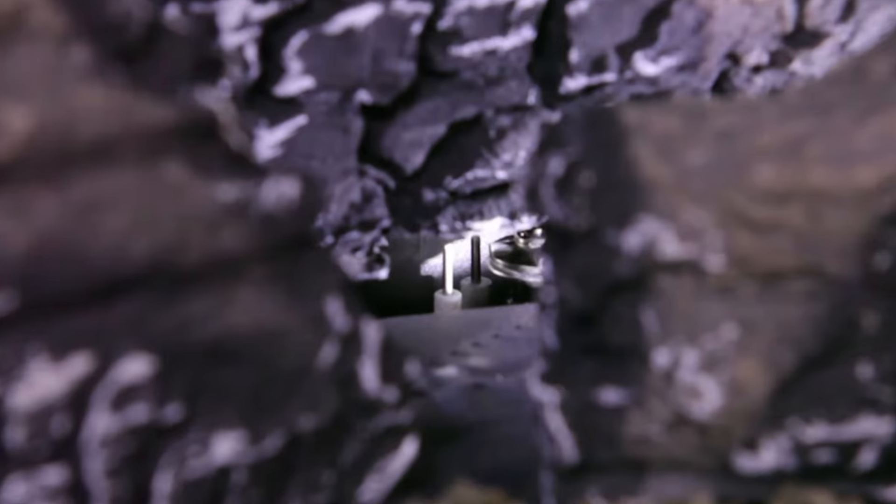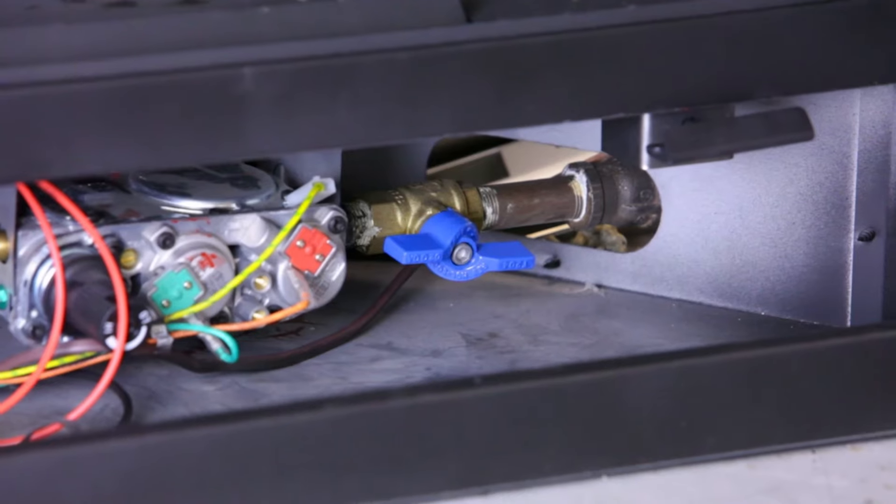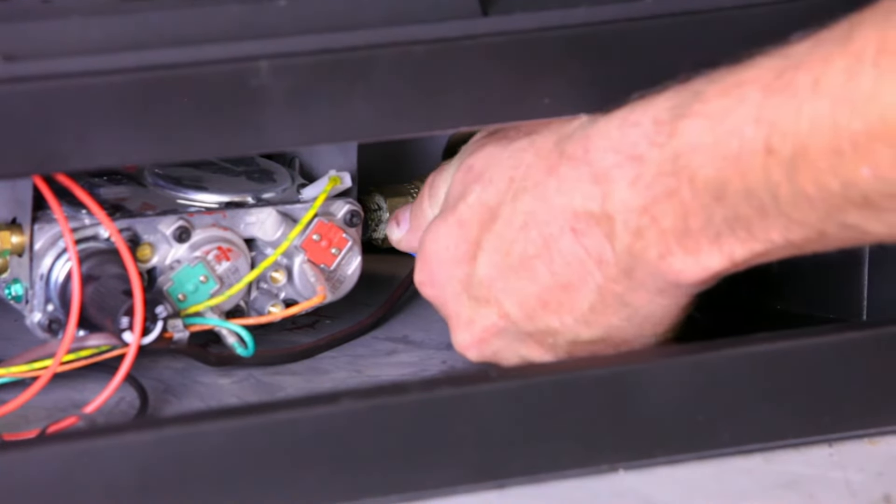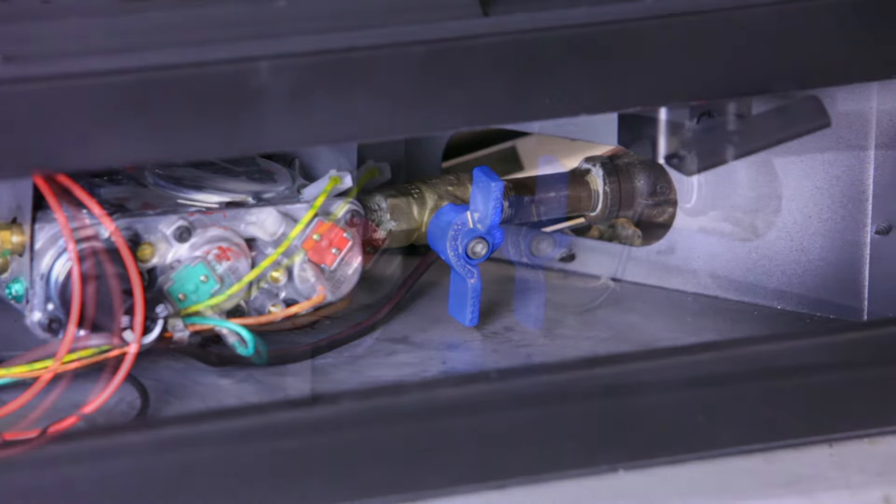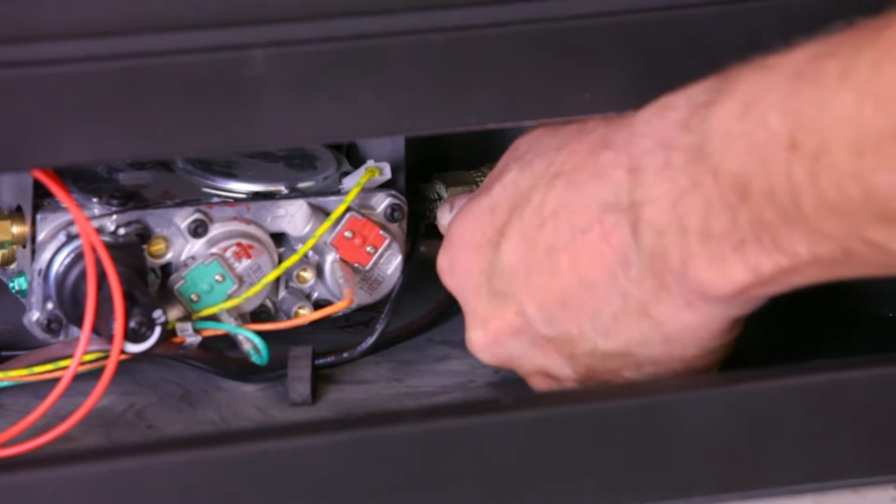If the electrode is sparking to the pilot hood but there is no flame, then check if a manual gas shutoff valve is open. The gas valve may be concealed. The manual gas shutoff valve is closed when the handle is perpendicular to the gas line and open when the handle is in line or straight with the piping.